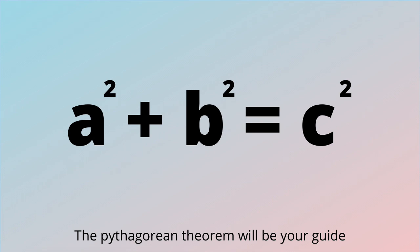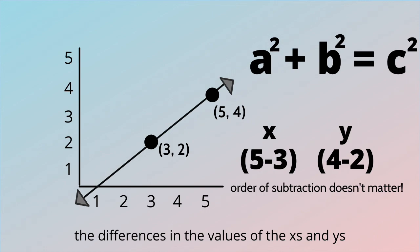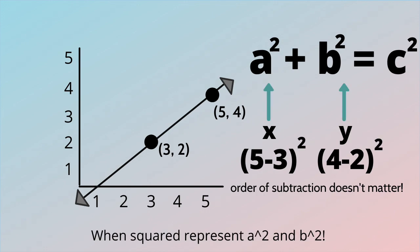The Pythagorean theorem will be your guide, the differences in values of the x's and y's, when squared represent a squared and b squared.